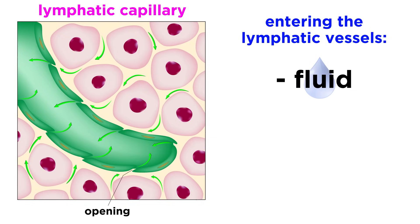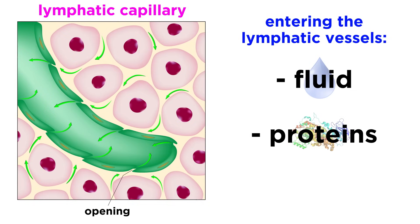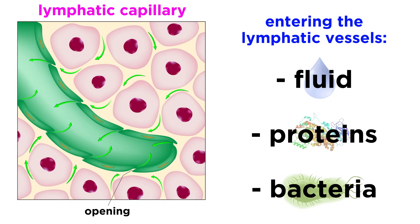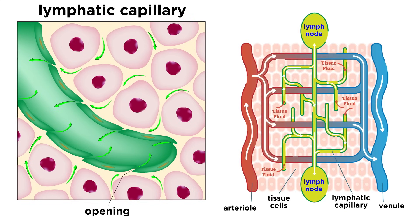It's not just fluid that enters lymphatic vessels, however. Proteins can enter, as well as even larger particles like bacteria and other pathogens. This is actually fortunate, as lymph must make it through the lymph nodes where it is examined by the immune system, so certain issues can be dealt with.